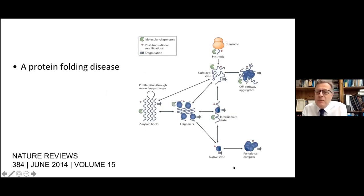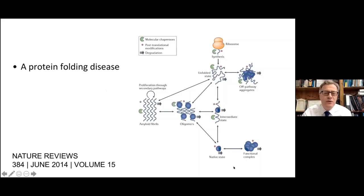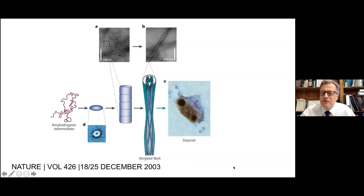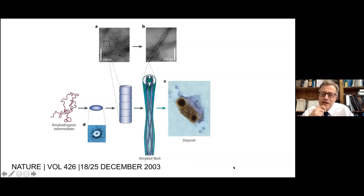I'm not going to get into this — there are people on this call who are far more expert. But as you've already heard from Vittoria, we're dealing with a family of disorders which involve abnormal protein folding and the eventual reaccumulation in this common, curious, fascinating structure: the amyloid fibril.